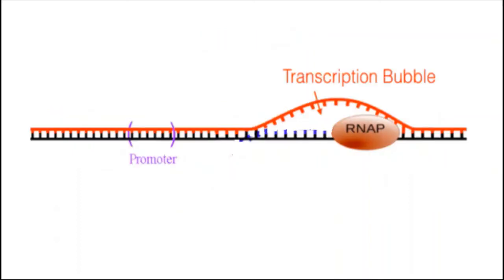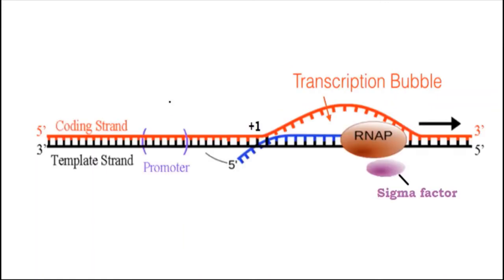DNA opening occurs at the minus 10 element where the strands are easy to separate due to many adenine and thymine bases. This forms a transcription bubble.